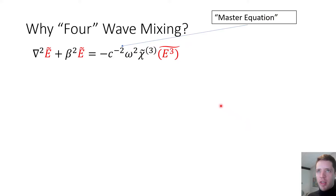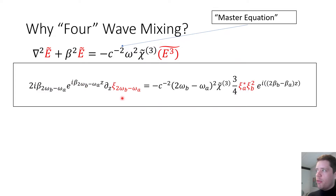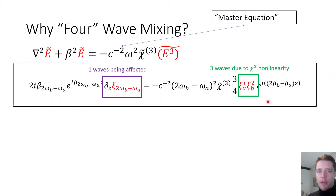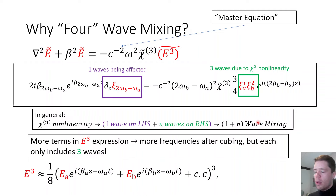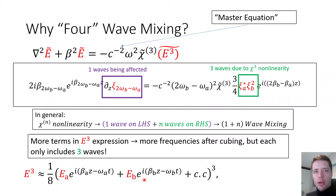The reason we call this four-wave mixing relates to the master equation. Starting from that equation, we find that the evolution of a field depends on fields on the right-hand side. For a chi-3 nonlinearity, we have one field on the left and three fields on the right — giving chi-3 + 1 = four-wave mixing. For chi-n, we get n fields on the right and n+1 wave mixing. Adding more frequencies to the expansion doesn't change this; any single term from the cube of the E field still involves exactly four fields.